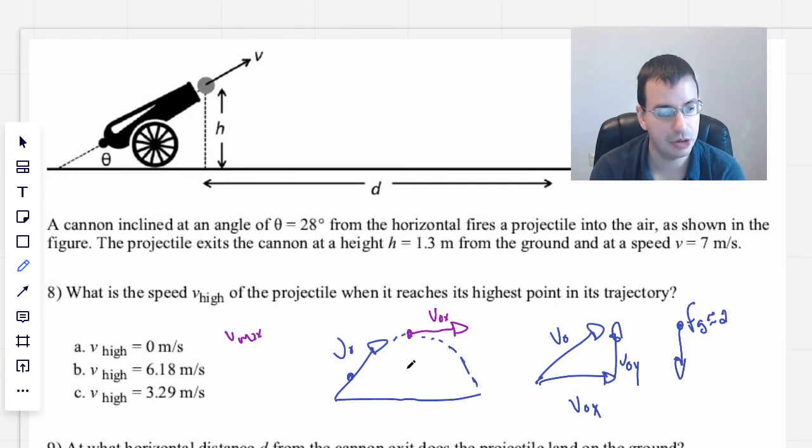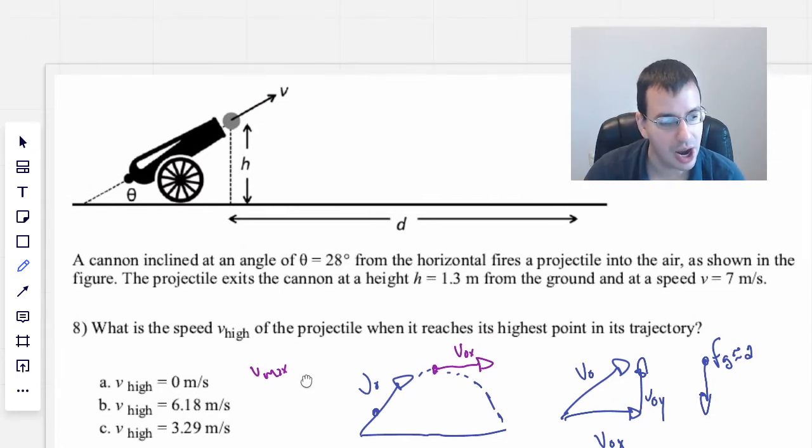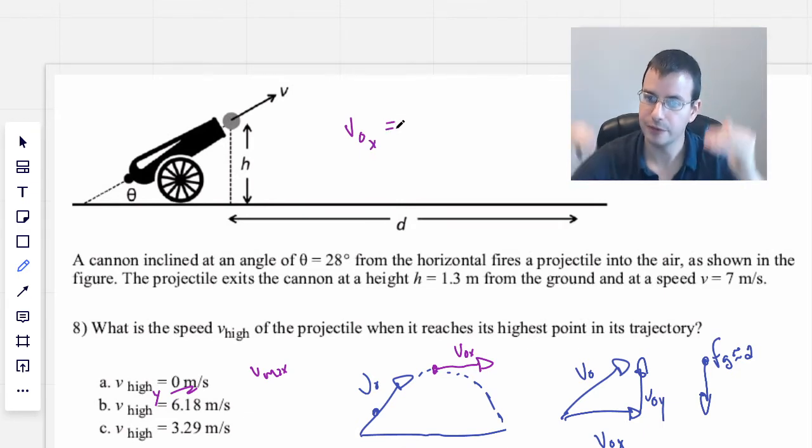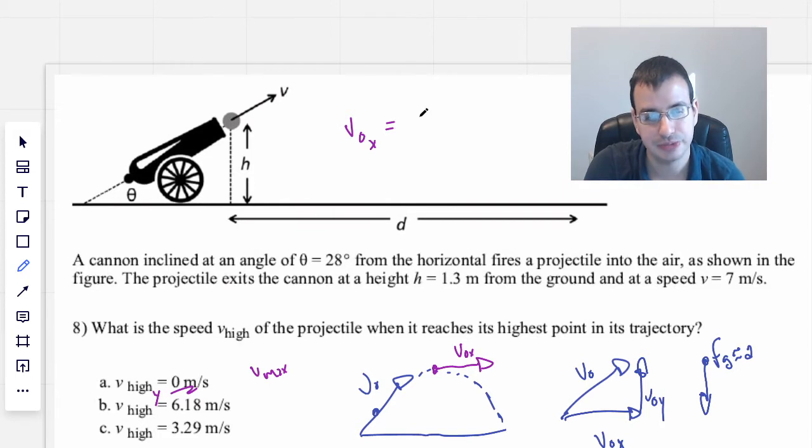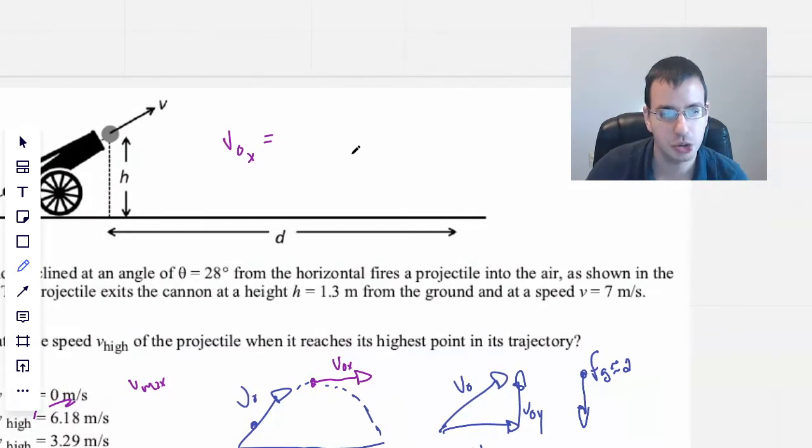So at the projectile's highest point in the trajectory, all we're going to be left with is the x component of the projectile motion. It's actually probably going to be moving its slowest at the pinnacle at the top.